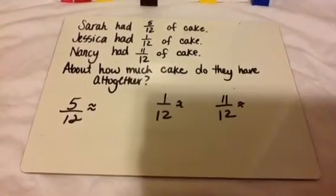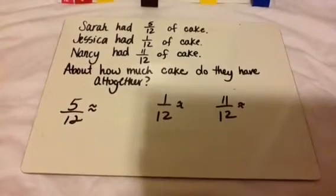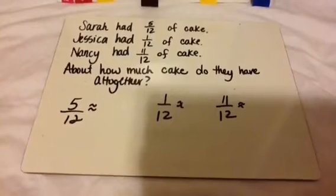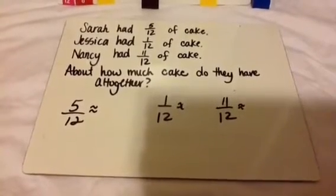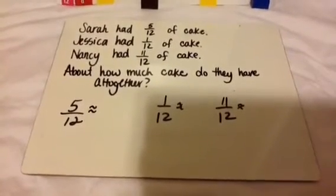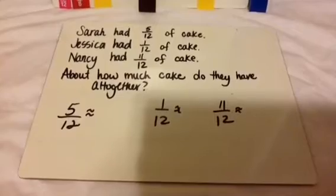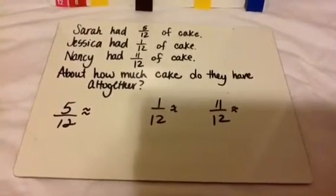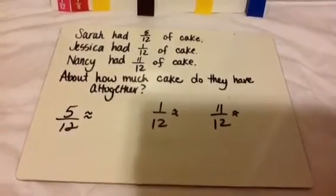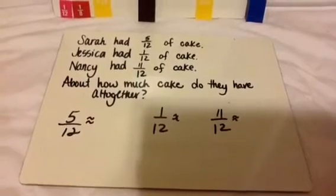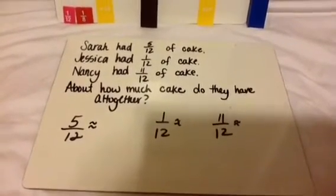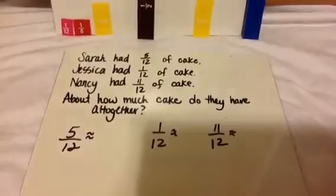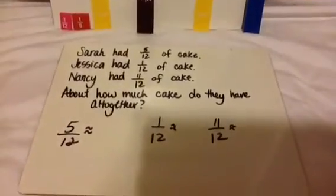Someone had 5 twelfths of cake. Jessica had 1 twelfth of cake. Nancy had 11 twelfths of cake. About how much cake do they have all together? It doesn't say what's the exact sum, because then you would just do 11 twelfths plus 1 twelfth plus 5 twelfths — easy addition of fractions. It says about how much.